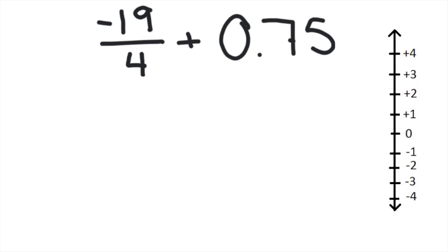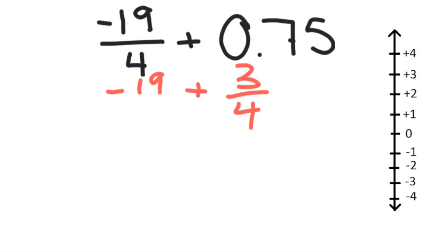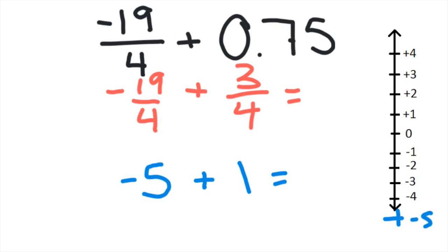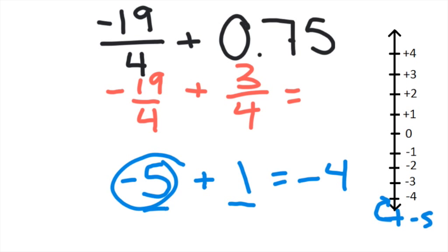Negative 19 fourths plus 75 hundredths. There is a fraction and there is a decimal. In this case, I think fractions will be easier because 75 hundredths is the same as three fourths. So I have negative 19 fourths plus three fourths. Now I'll estimate: negative 19 fourths is very close to negative five, plus one. Starting at negative five on the number line and adding one, I go up to negative four. What I really did was subtract the absolute values and got four, and because there are more negatives, the answer is negative.